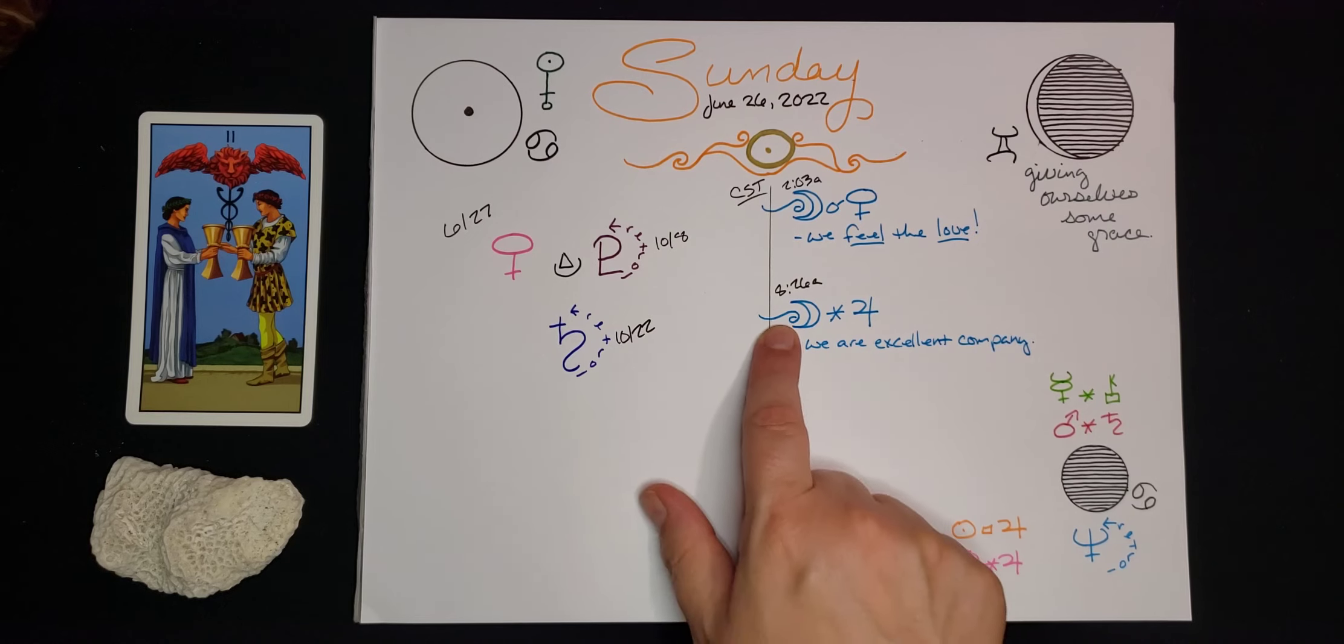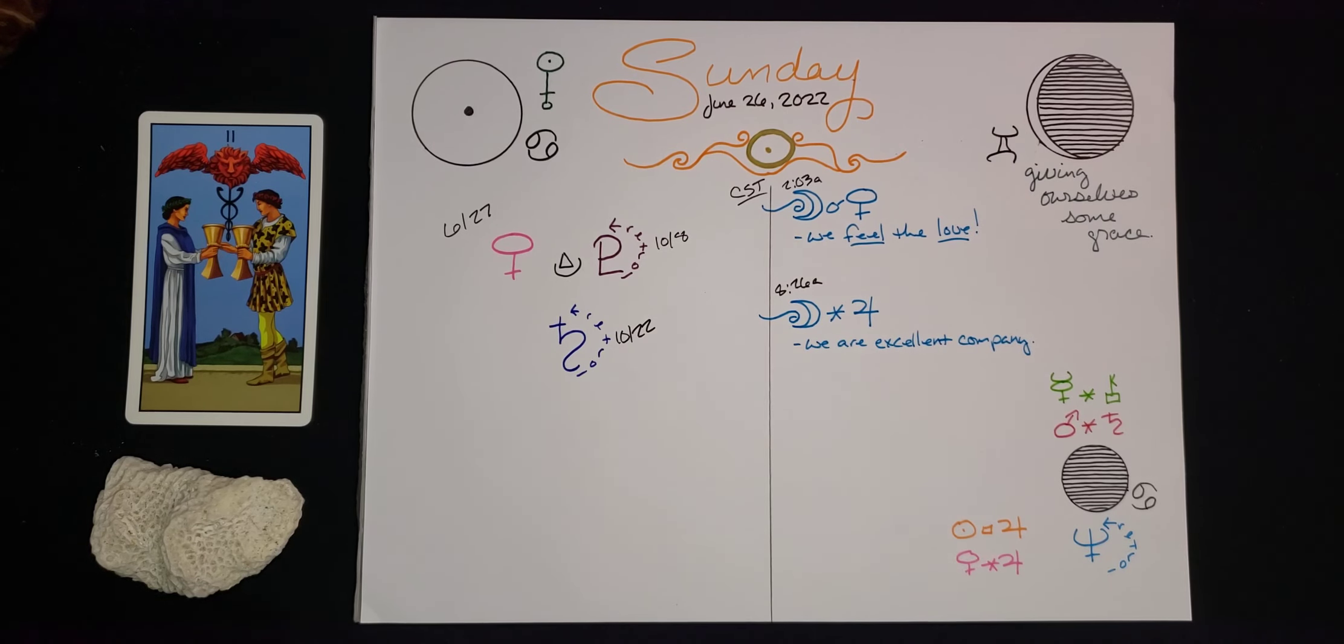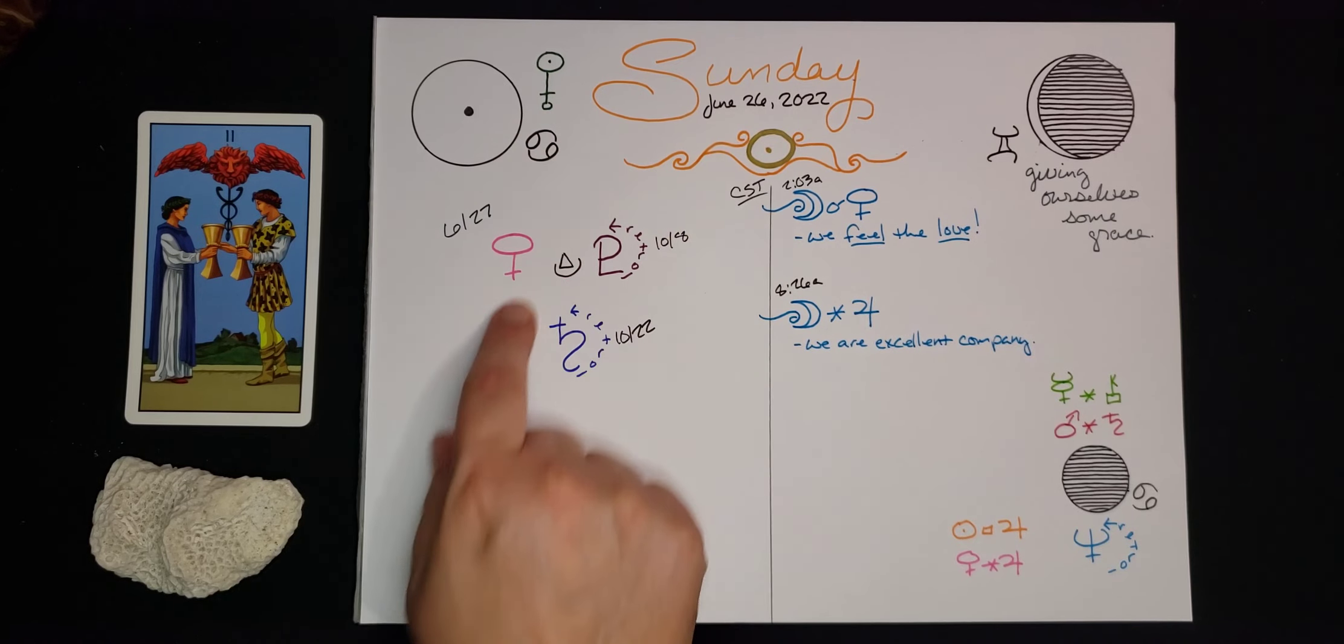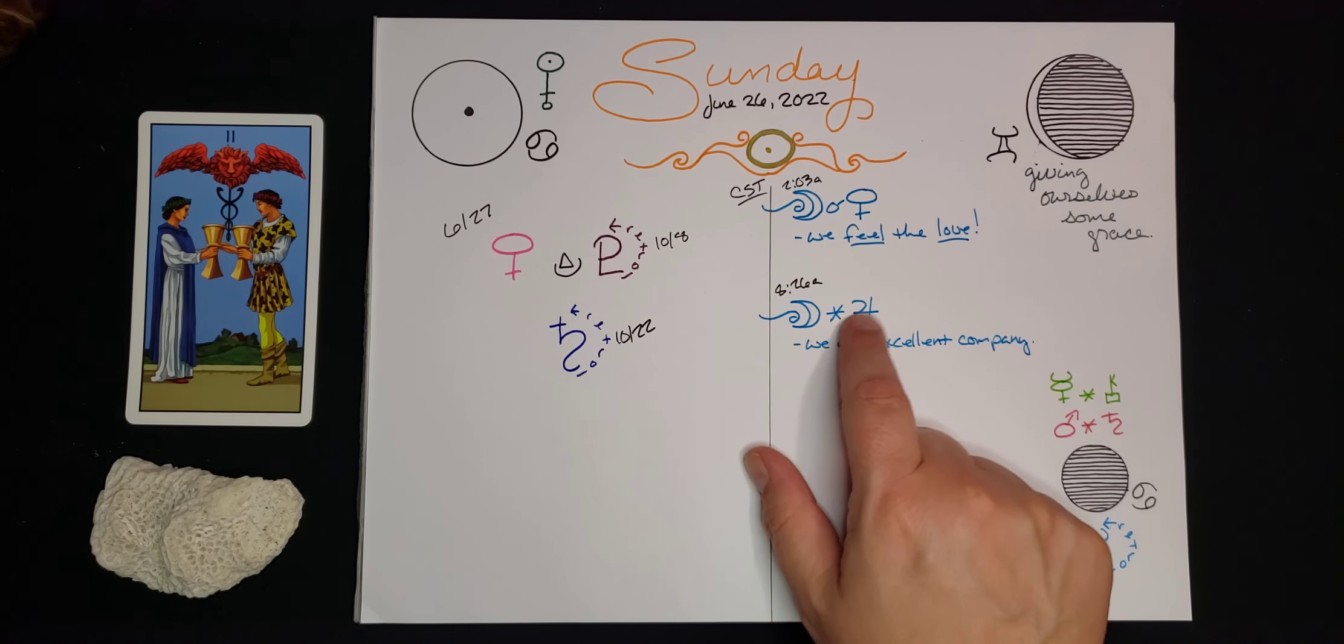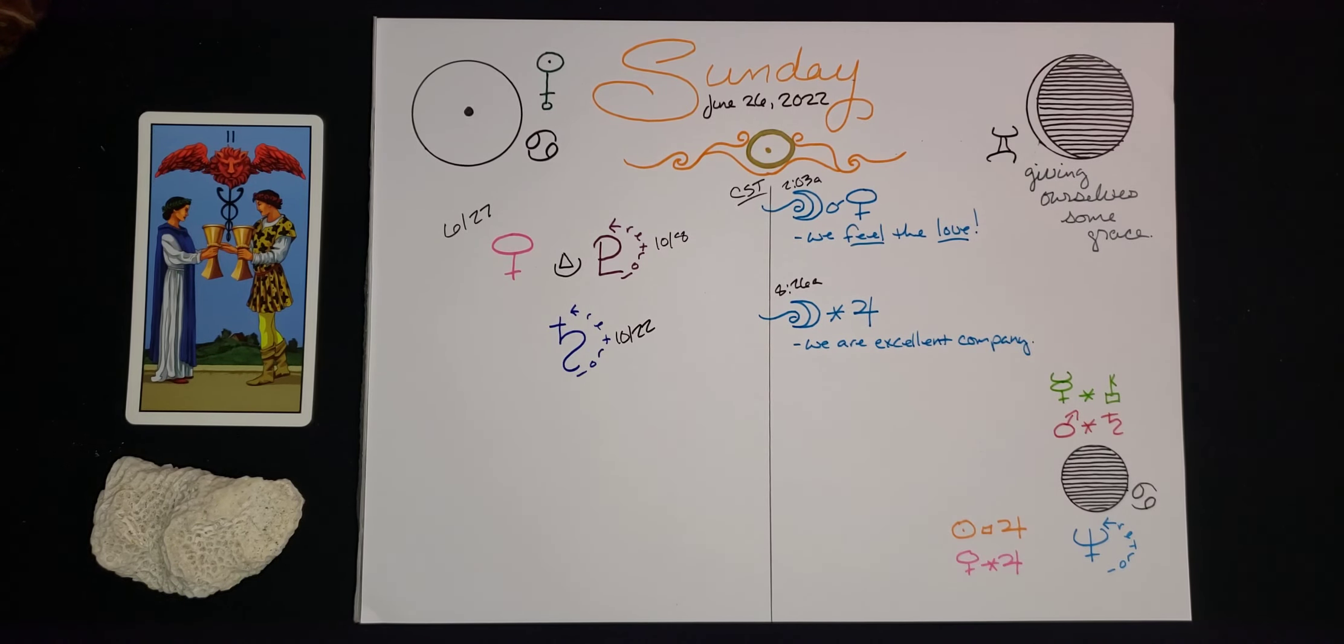And then at 8:26 this morning, moon goes sextile Jupiter. We can be really excellent company at this time. We can be really open and sharing about ourselves. We can be generous with others. Again, look out for being overly generous, but with that sextile vibration, that just says cooperation is happening. That just says that whoever it is that we are sharing our time with and our company with, good things might come from that.